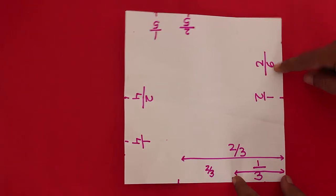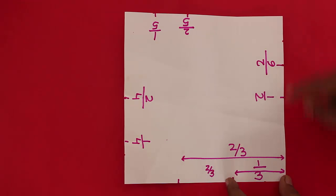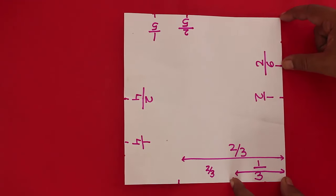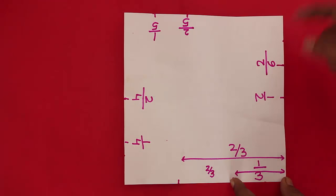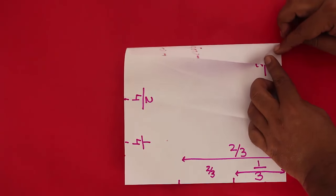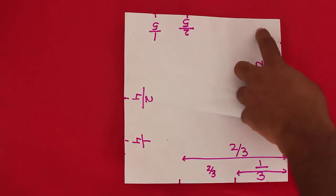And you can see this 2/6 is the same as 1/3, so this distance is exactly the same. And so if I divide this 2/6 in half, I can get 1/6 of the square.